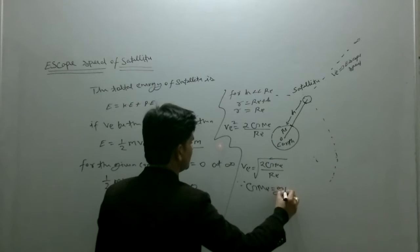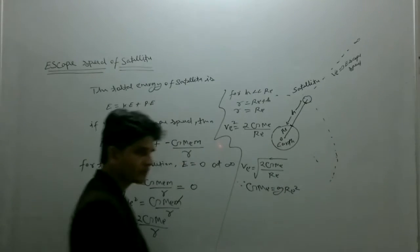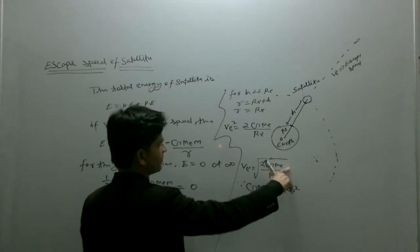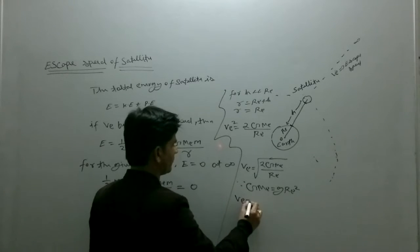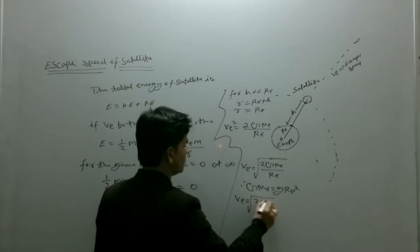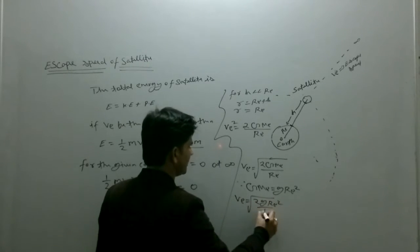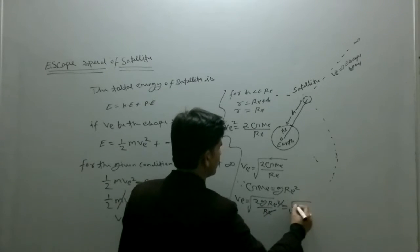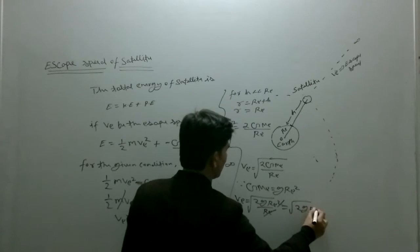GM_e equals to g R_e squared. By replacing this term, we have square root of 2g R_e squared divided by R_e. One R_e is cancelled, that equals to square root of 2g R_e.